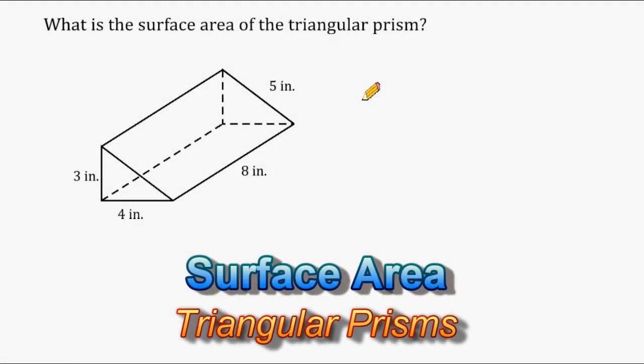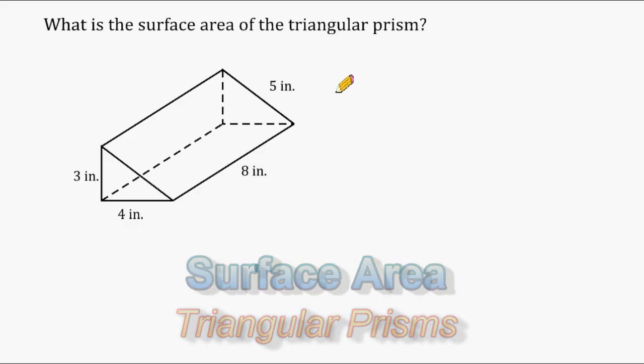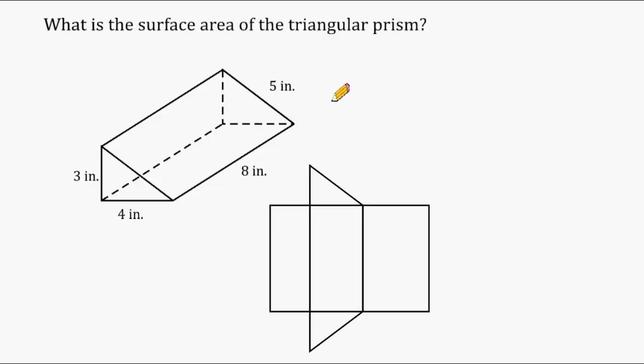Hey, this is Mr. Masonette. What we're going to do in this tutorial is practice finding the surface area of a triangular prism, which consists of two congruent triangles and three rectangular surfaces.